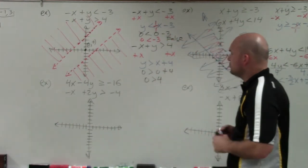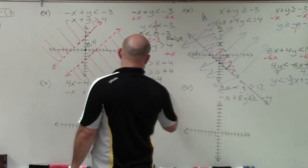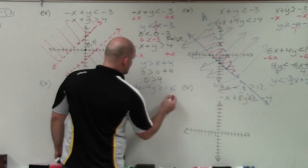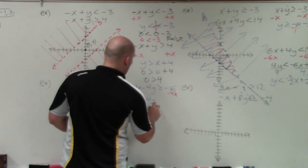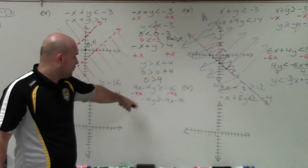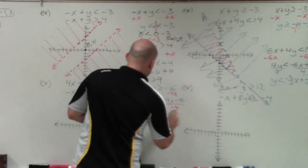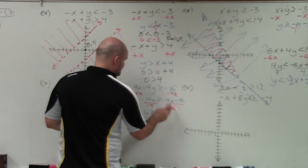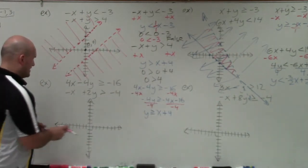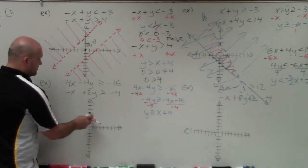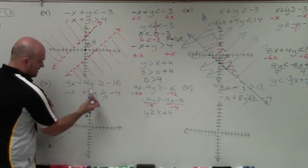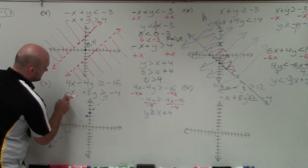For the next example, solve for y in 4x minus 4y is greater than or equal to negative 16. Subtract 4x from both sides: negative 4y is greater than or equal to negative 4x minus 16. Now divide by negative 4 — and be careful, you have to flip the sign. So y is now less than or equal to x plus 4. The y-intercept is 4, slope is up 1 over 1, and it's a solid line since it's less than or equal to.